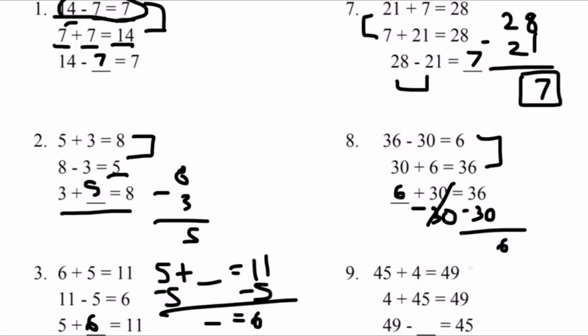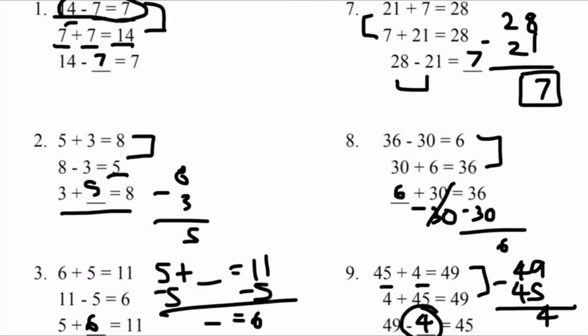Last problem, number 9: 45 plus 4 equals 49. 4 plus 45 equals 49. These two equations are basically the same but the numbers are switched. Therefore, 49 minus what equals 45? We know that 49 minus 4 equals 45 because 45 plus 4 equals 49. Let's double check: 49 minus 45 — 9 minus 5 equals 4, 4 minus 4 equals 0 — so our blank should be 4. 49 minus 4 equals 45.